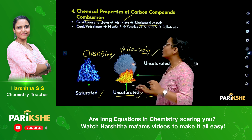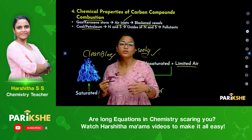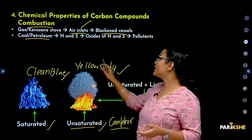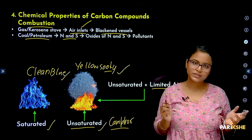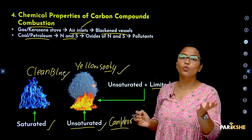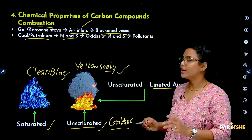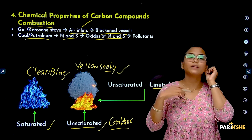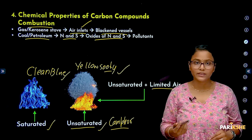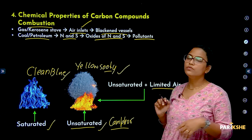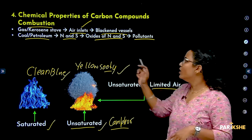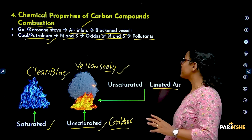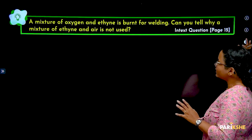Coal and petroleum are fossil fuels. When coal and petroleum are combusted, lots of oxides of nitrogen and sulfur are released into the environment, and this causes a lot of pollution. So coal and petroleum are considered as pollutants.